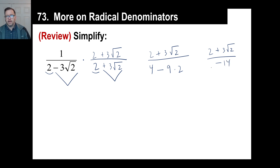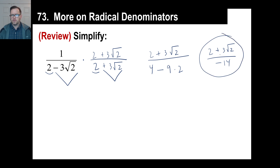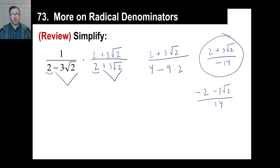Do recall this: anytime you have a fraction and you got this as your answer but the book has something different — if the book has negative two, negative three square root of two, and positive 14 instead of negative 14 — we're completely fine. As long as every term in that fraction has the opposite sign, it is completely fine to call that a correct answer, because it is.